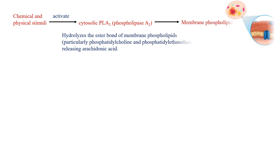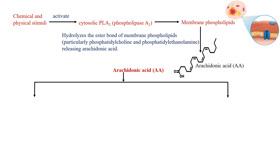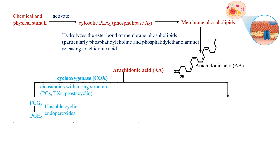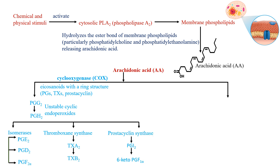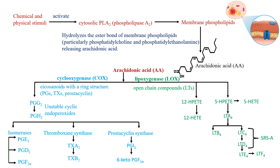Now let's move to another pathway where arachidonic acid takes a different road, guided by the lipoxygenase enzyme, creating compounds with open-chain structures. When the LOX enzyme acts, it does not create cyclic endoperoxides like COX; instead it transforms arachidonic acid into open-chain compounds. Leukotrienes play a crucial role in the immune system, especially during allergic reactions and inflammation.